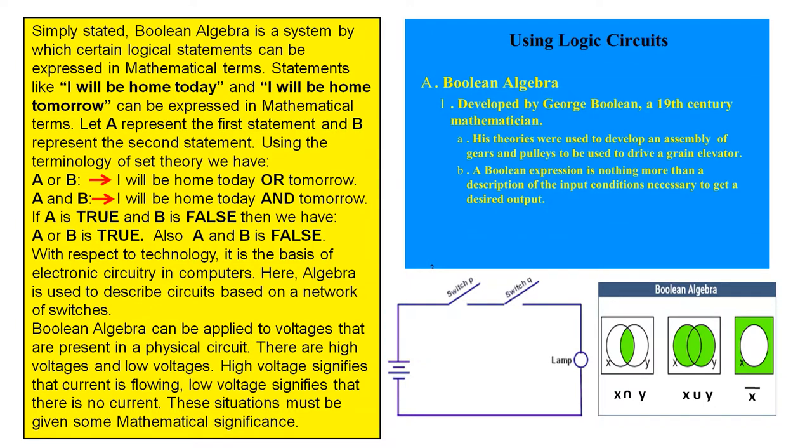Using the terminology of set theory we have A or B means I will be home today or tomorrow. A and B means I will be home today and tomorrow.